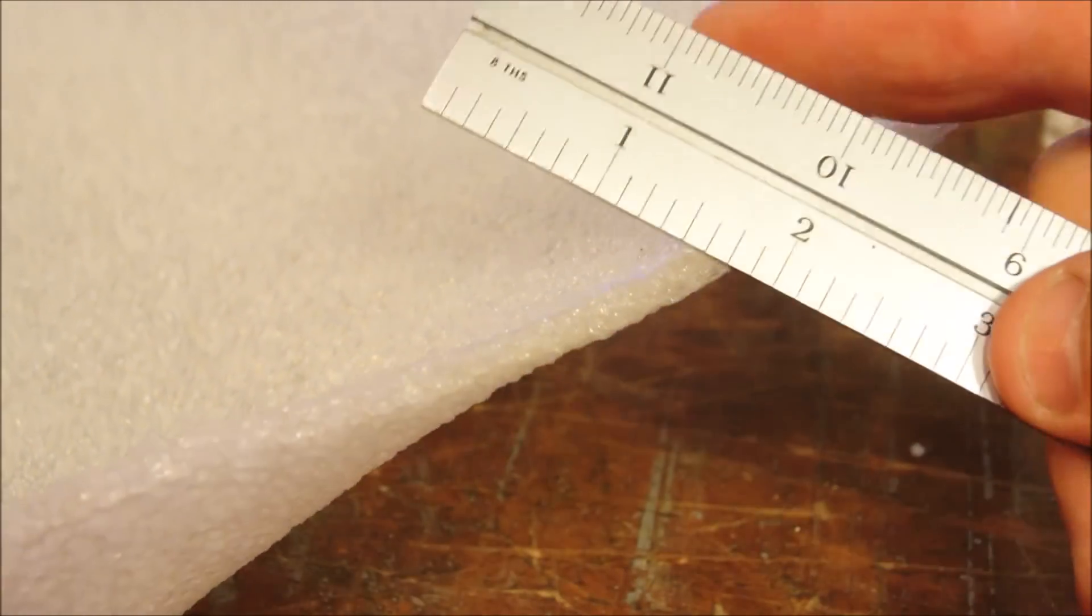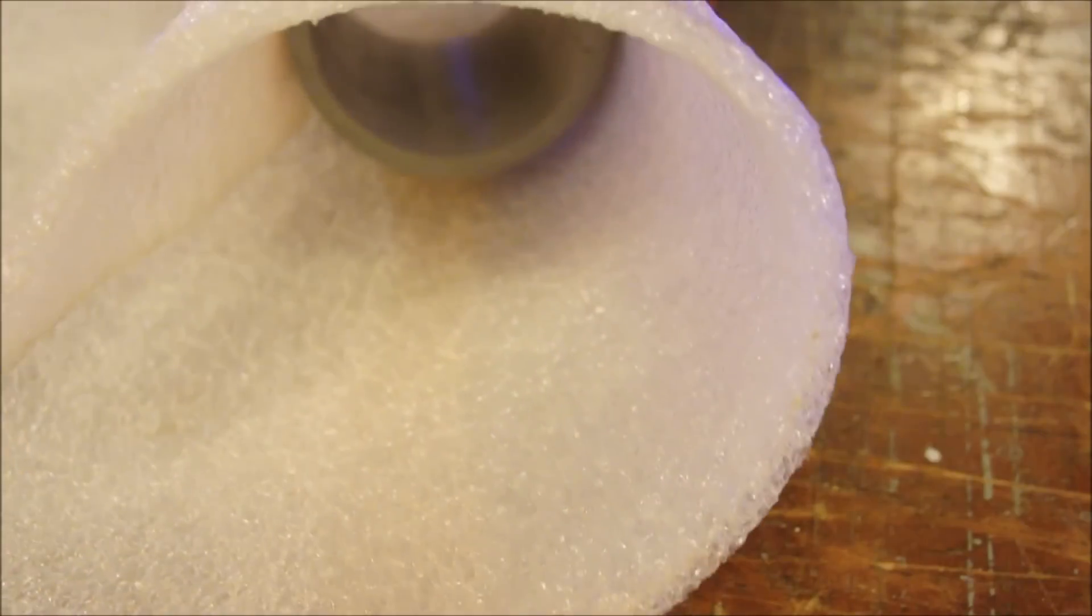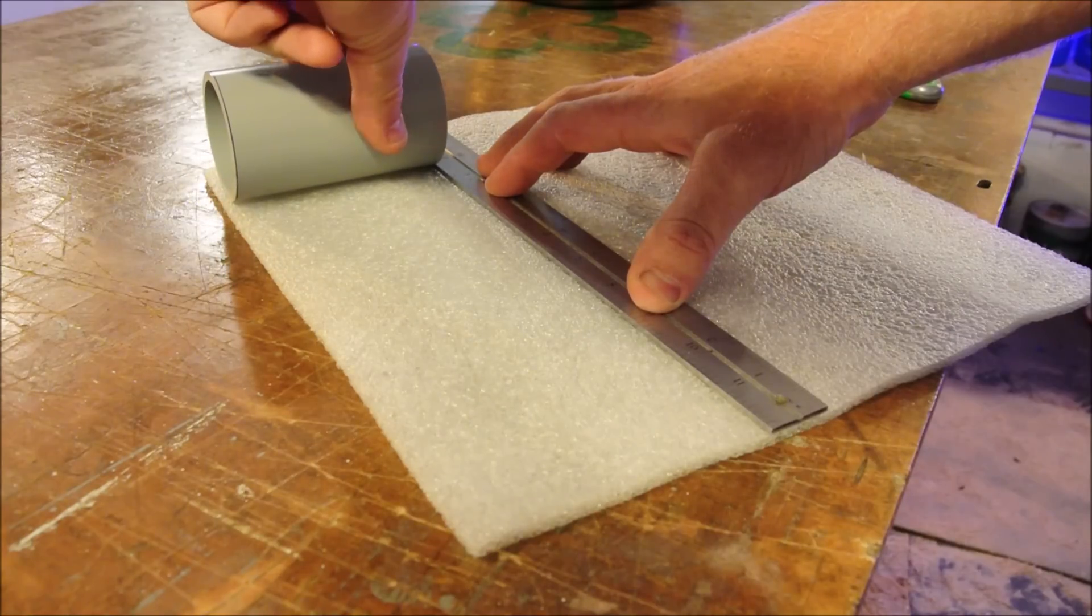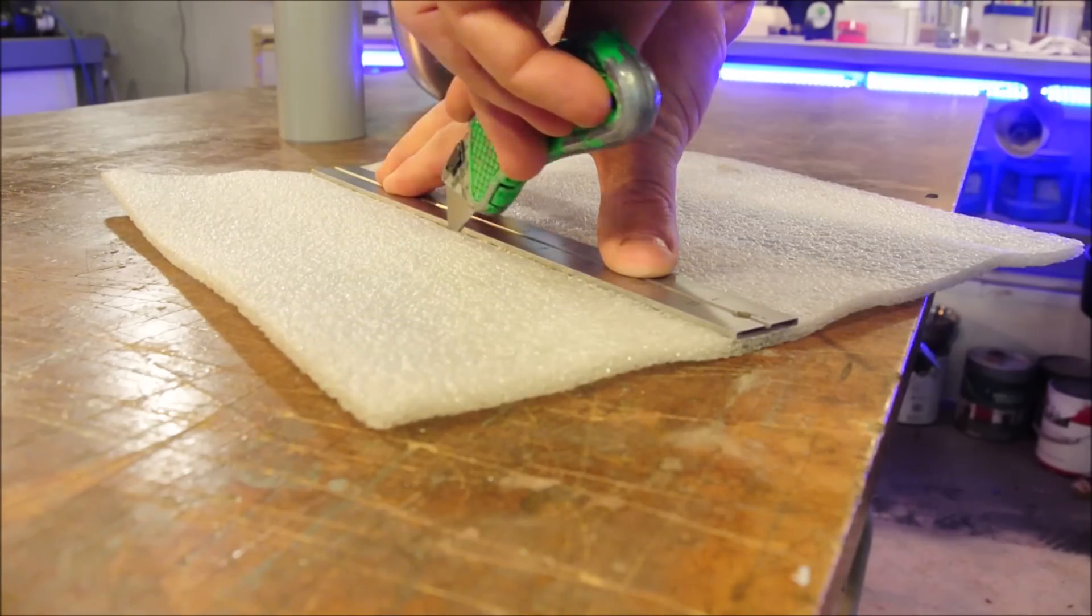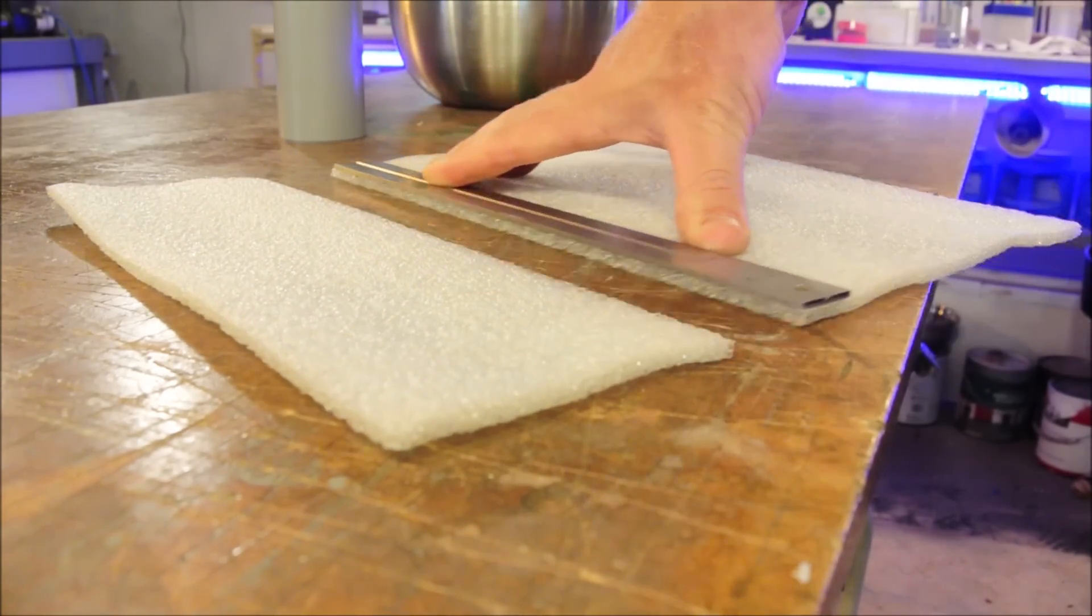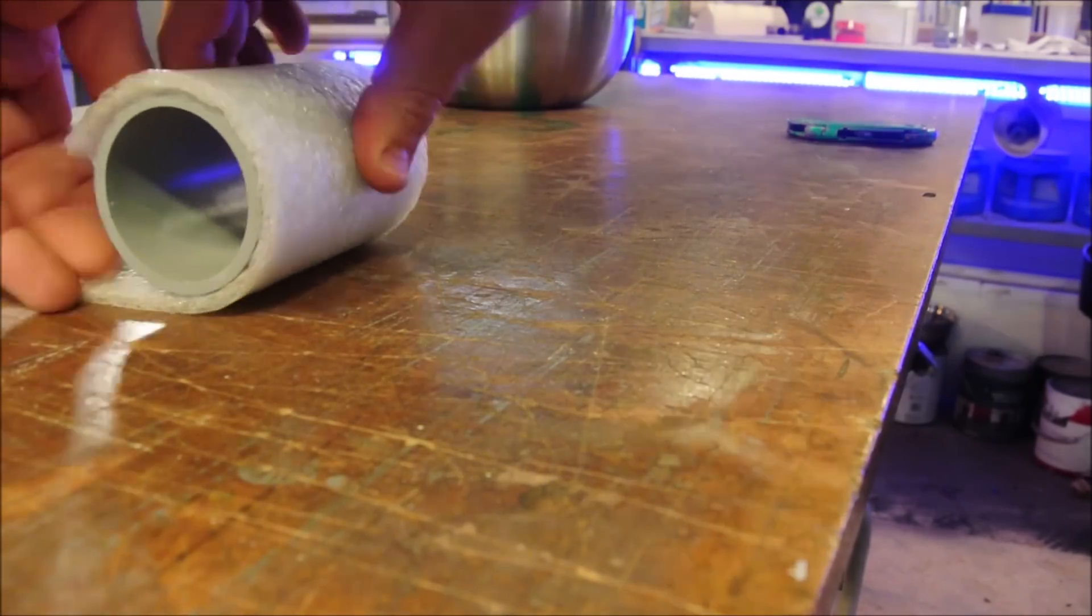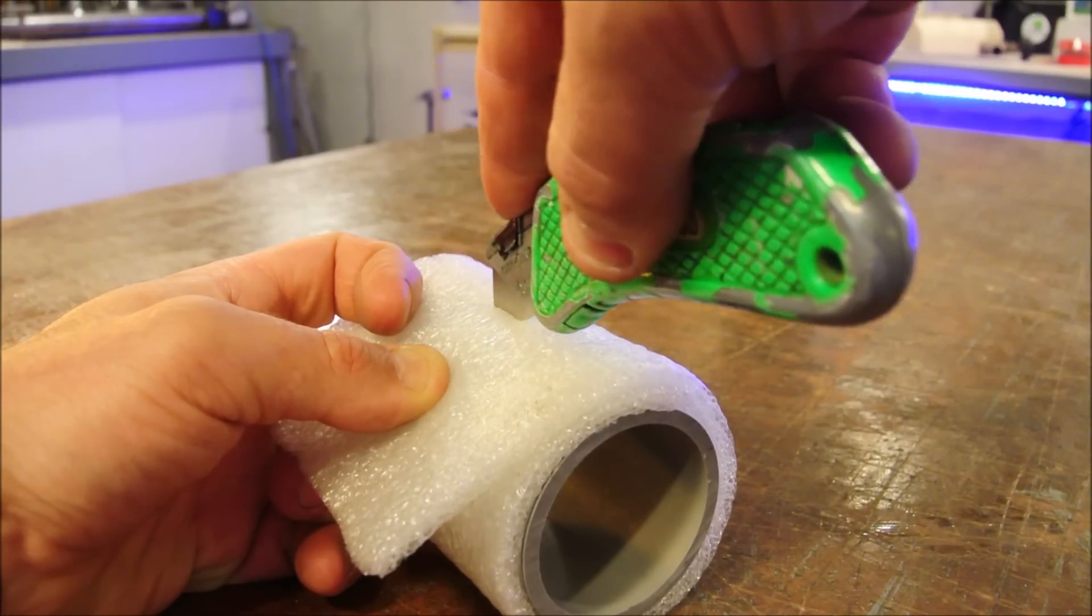And here we have some plastic foam. It's about a quarter of an inch thick. This stuff's pretty easy to find. And we can make our pipe nice and soft by wrapping it in this.